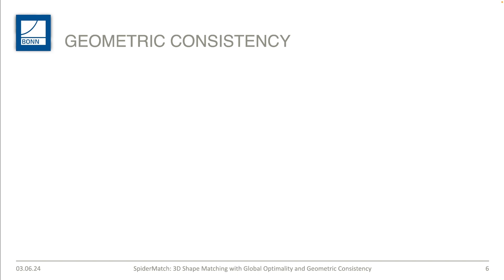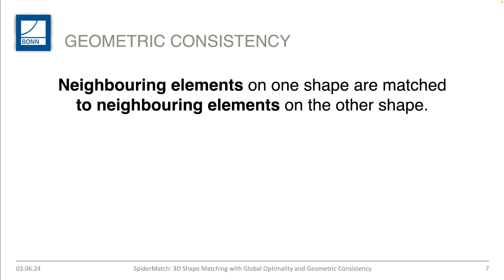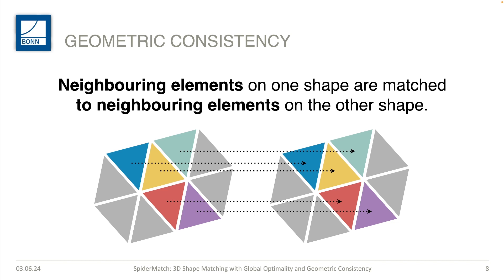As already mentioned, matching between two 3D shapes should actually be smooth, but smoothness is very often overlooked by other methods. To obtain such smooth matchings, a property which we call geometric consistency has to be enforced. We loosely define geometric consistency as matching neighboring elements on one shape to neighboring elements on the other shape. The key idea is to consistently preserve neighborhood for all matched vertices.